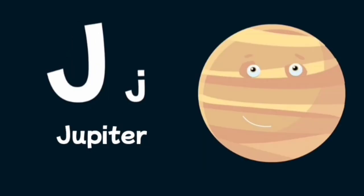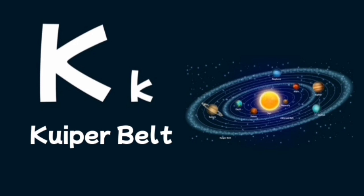J is for Jupiter, the largest planet in our solar system. K is for Kuiper belt, a ring of icy objects around the sun in the outer solar system.